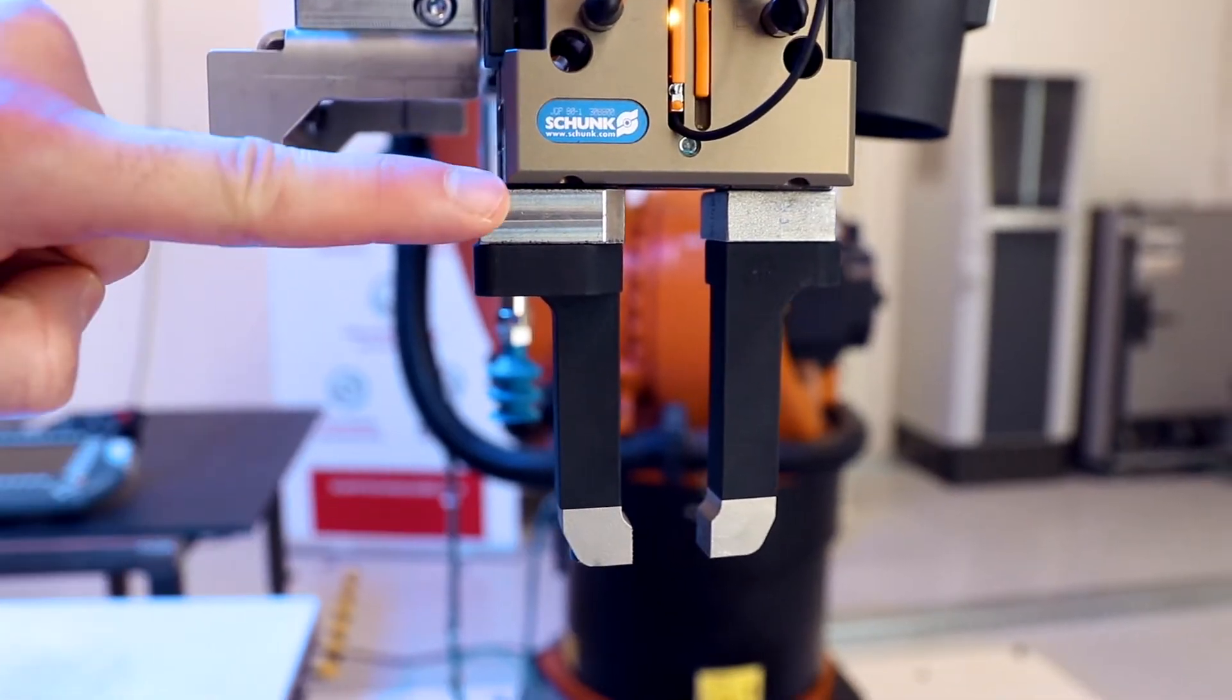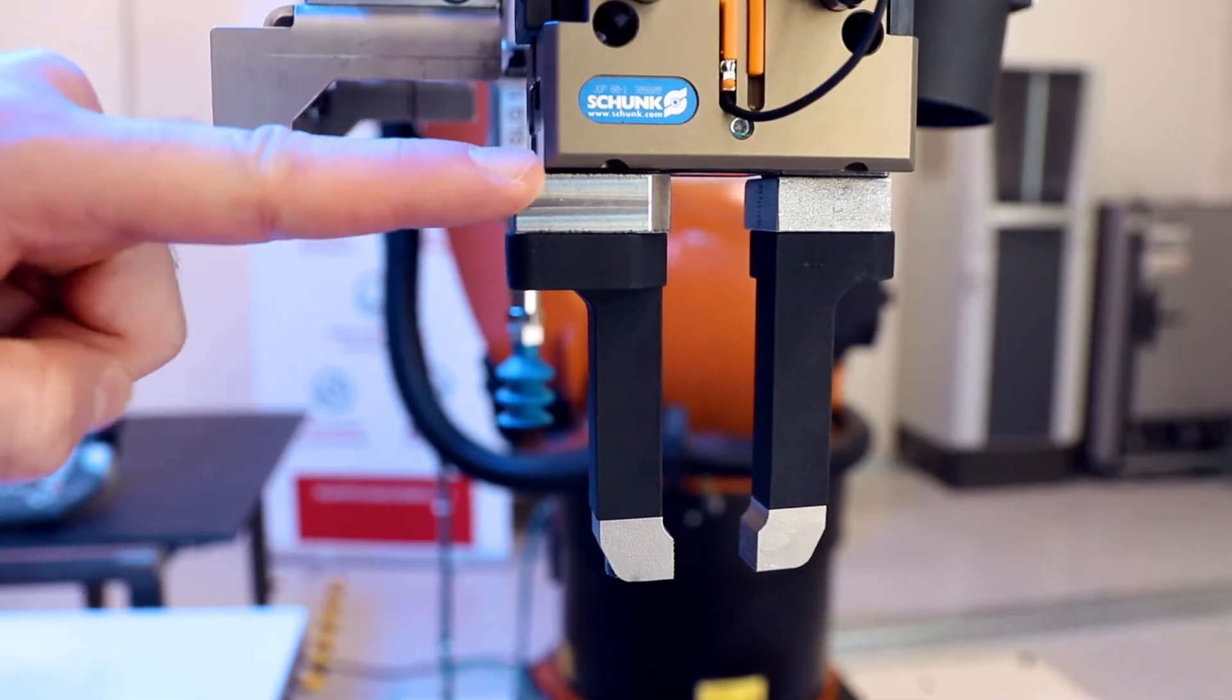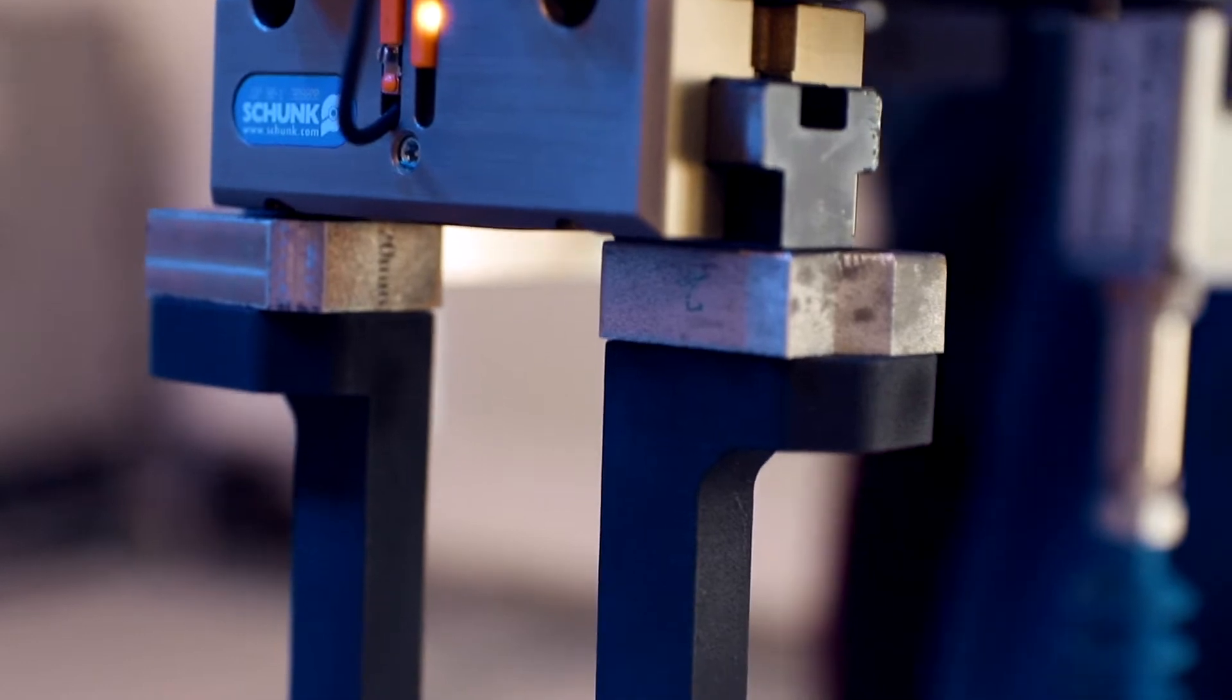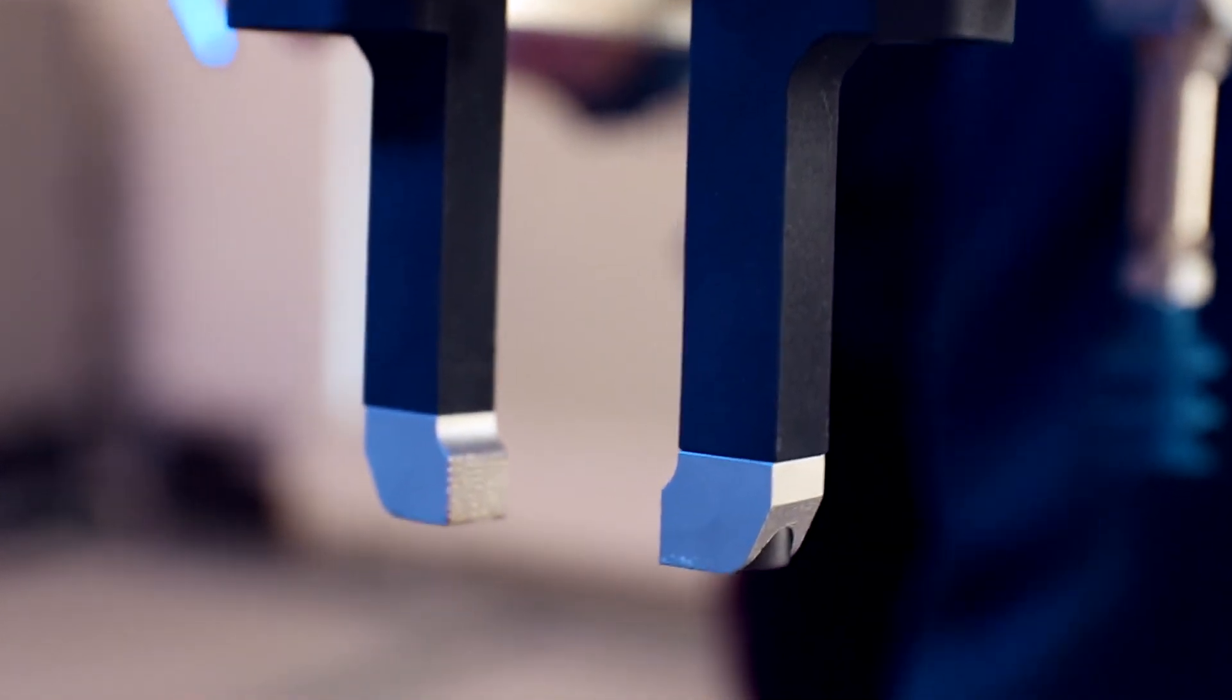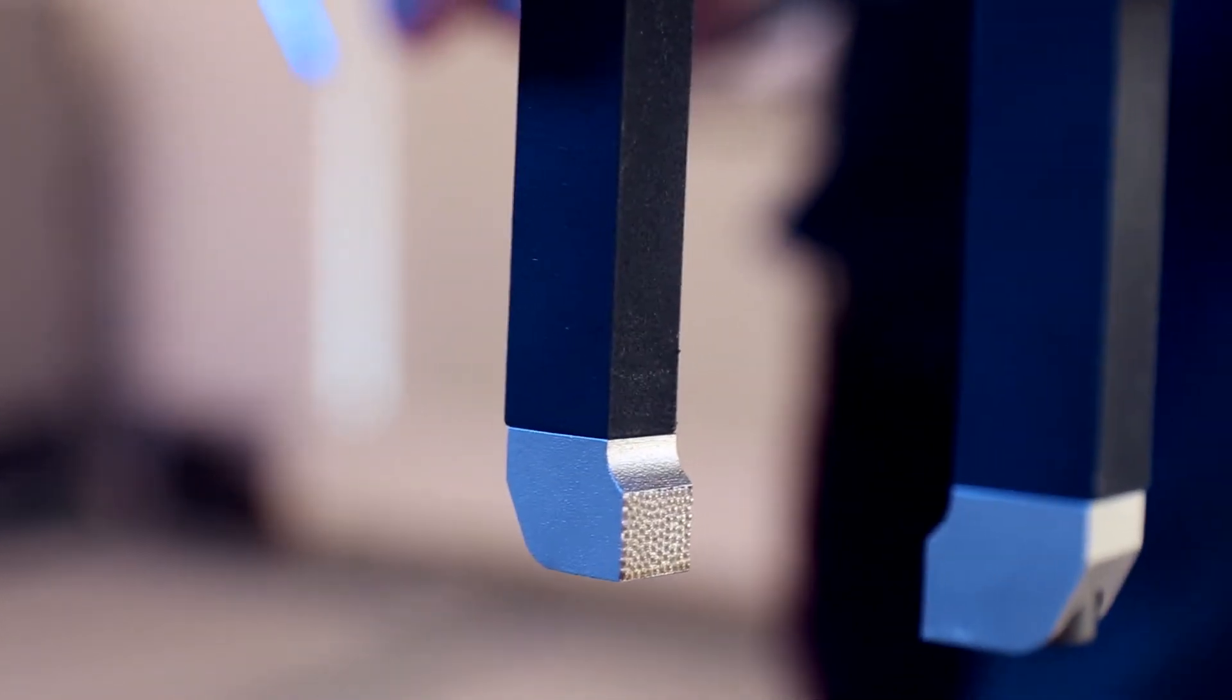To achieve modularity we divided the fingers into three separate parts. In this case 3D printing was used for all three separate parts but in the future we would only like to focus on the tip of the fingers because that will be the main variable.